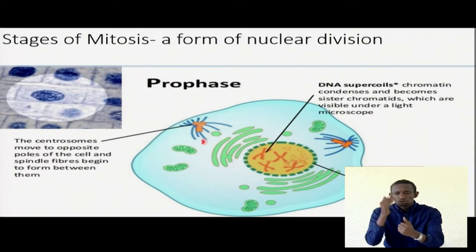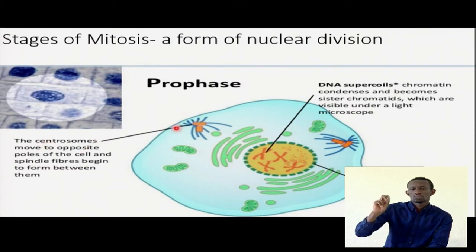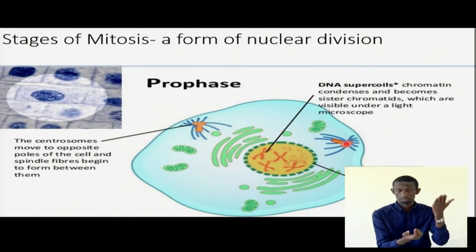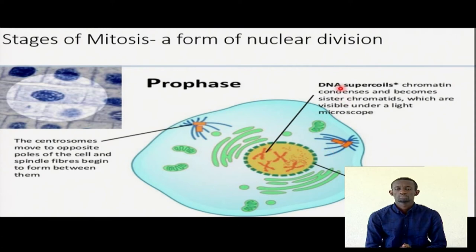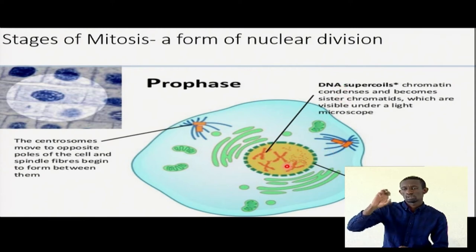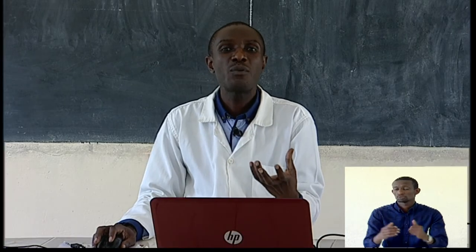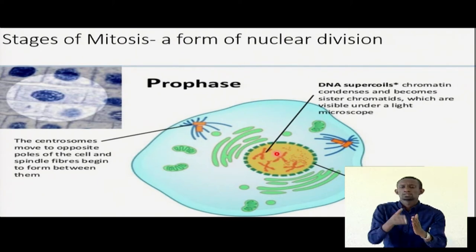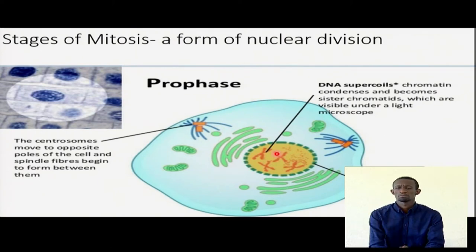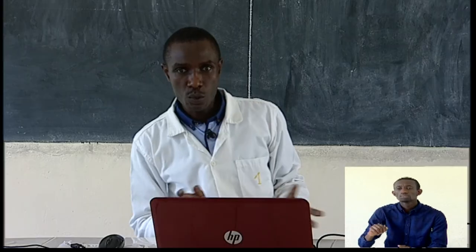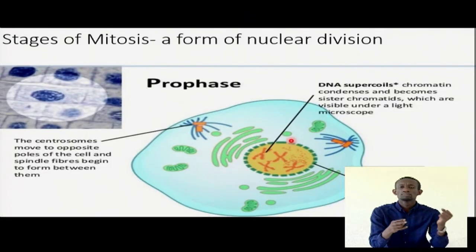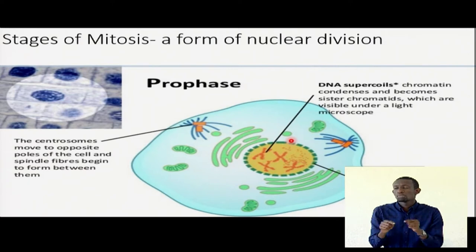So we look at the changes. The centrioles move to opposite poles — they are migrating. The spindle fibers form. Supercoiling continues — it coils, condensation comes in, and we are able to see our chromatin this time visible as X-shaped. It changes the name — sister chromatids that are actually part of a chromosome. The nuclear membrane is broken down and starts to disappear, represented by dashed lines.